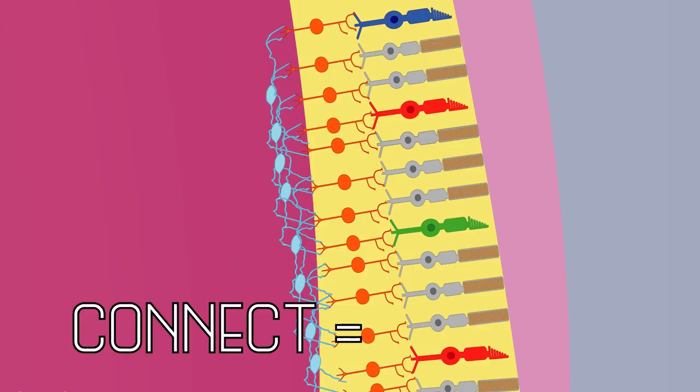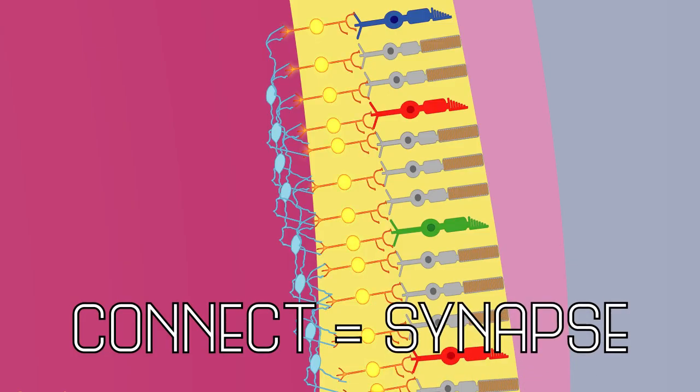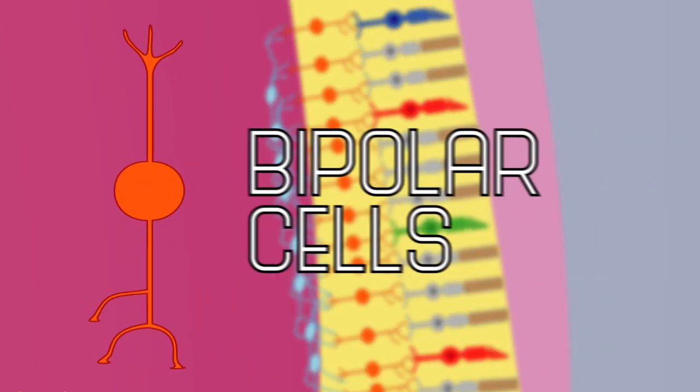I'll explain this as best I can, but it gets a little complicated, so hopefully this diagram will help us out. The photoreceptors connect, or synapse, onto the next layer of cells. These cells are called bipolar cells.